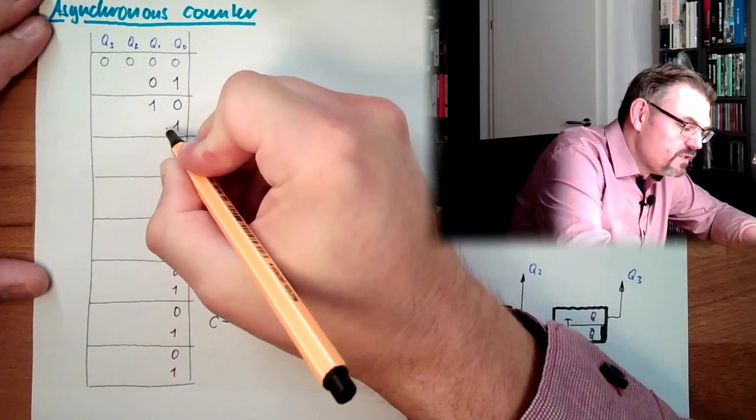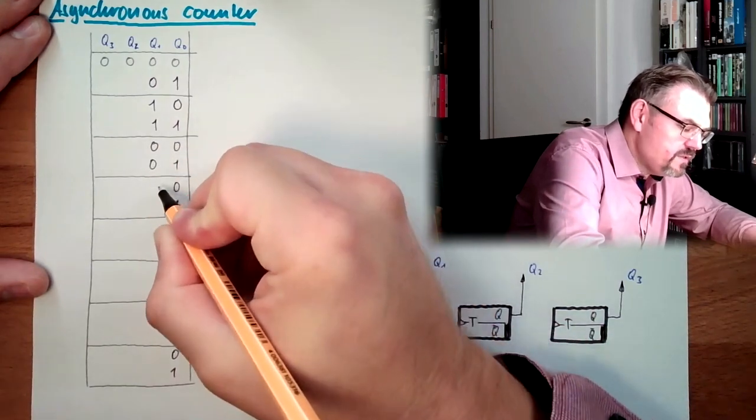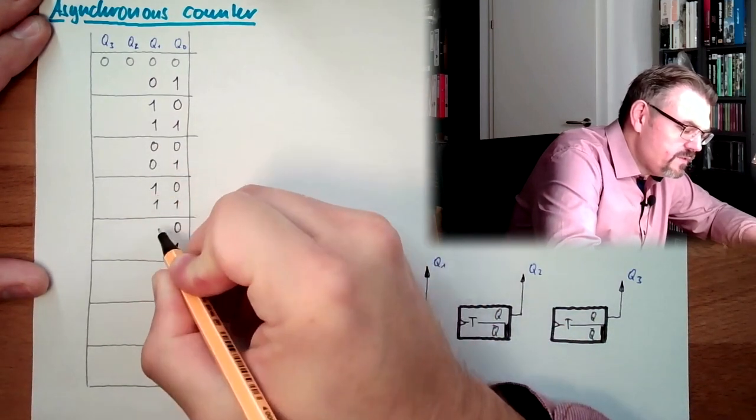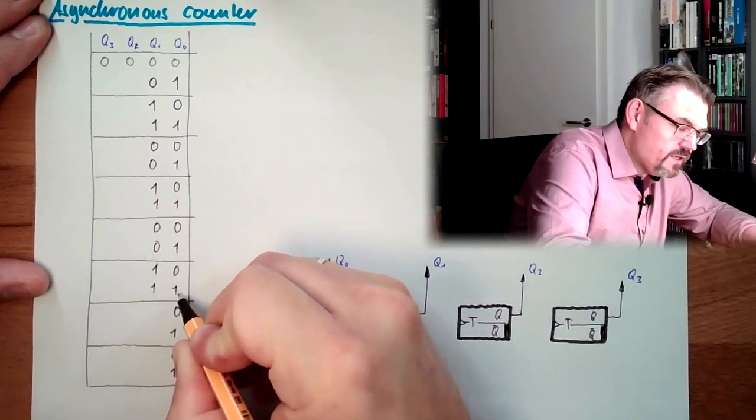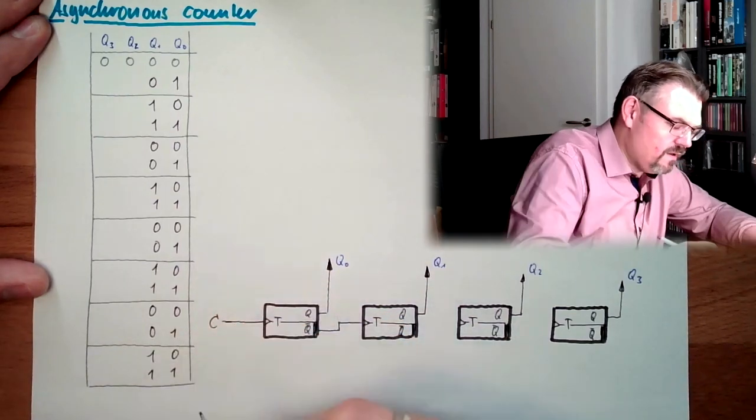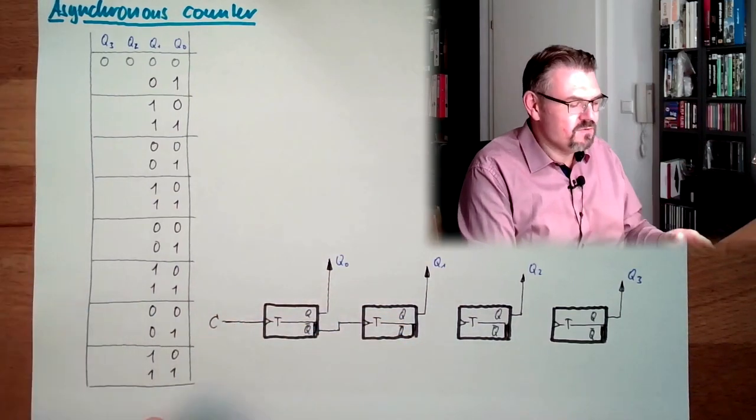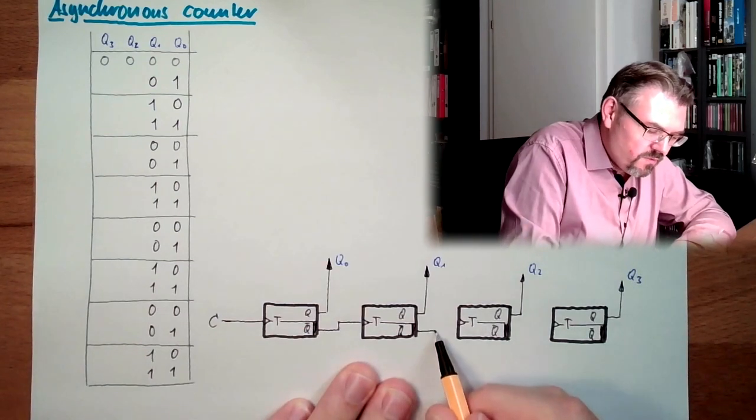Now when we are switching from 1 to 0, toggle. Here is nothing changing, because here we are switching again, toggle. This is what happens to the second. And now I make the same to the third.